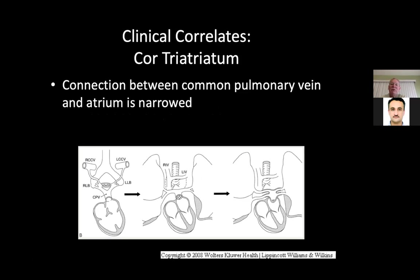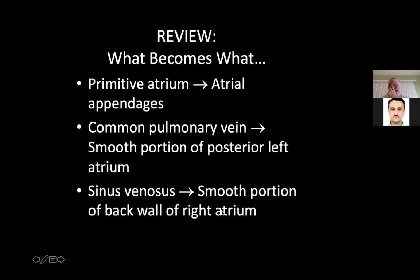When the connection between the common pulmonary vein and the atrium narrows, you end up with a confluence behind the left atrium. The primitive atrium gives rise to the atrial appendages, and the common pulmonary vein forms the smooth posterior portion of the left atrium, while the sinus venosus forms the smooth posterior wall of the right atrium. So the atria are formed by not only the common pulmonary vein on the left side but the sinus venosus on the right side, and the primitive atrium really becomes the atrial appendages — anterior structures — while the sinus venosus and common pulmonary veins are posterior.